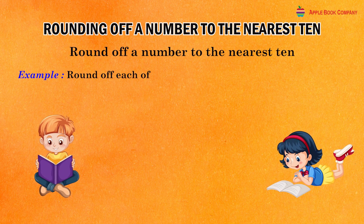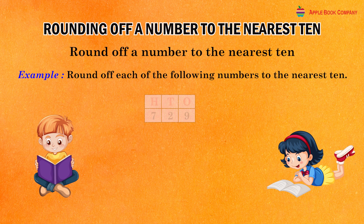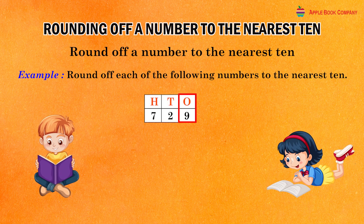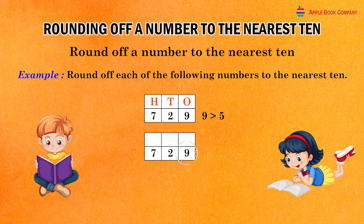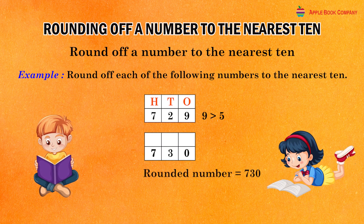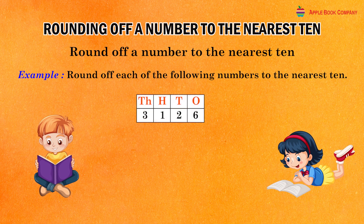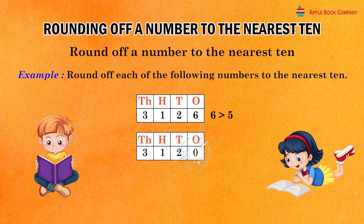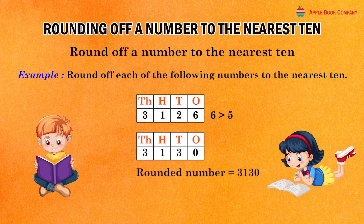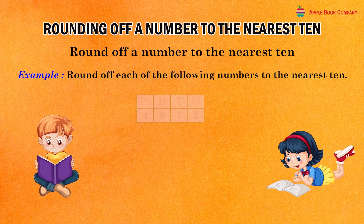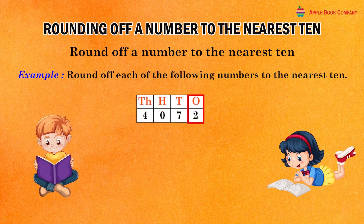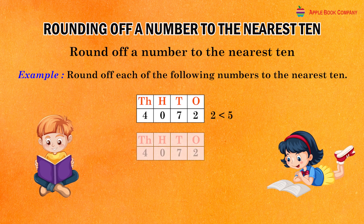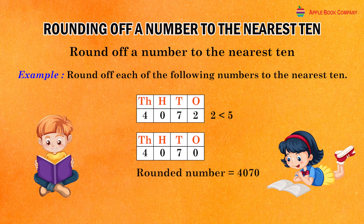Example 1: Round off each of the following numbers to the nearest ten. In the given number 729, the one's digit is nine which is greater than five. So, replace the one's digit by zero and add one to the tens digit. Rounded number is equal to 730. In the given number 3126, the one's digit is six which is greater than five. So, replace the one's digit by zero and keep the other digits as they are. Rounded number is equal to 4070.